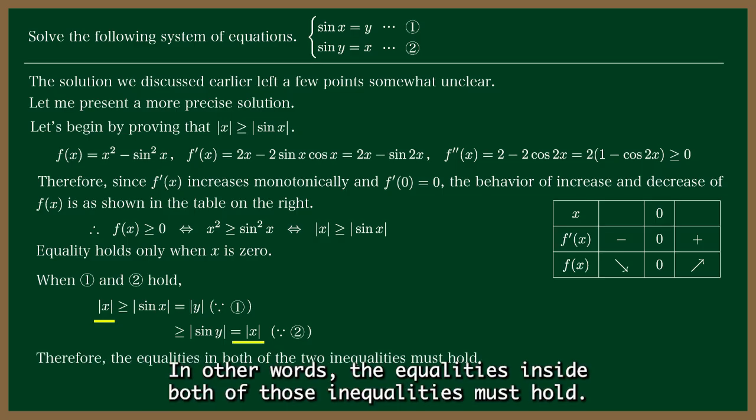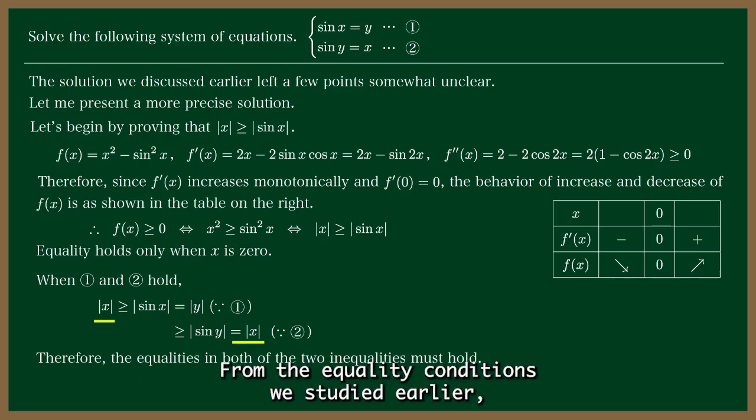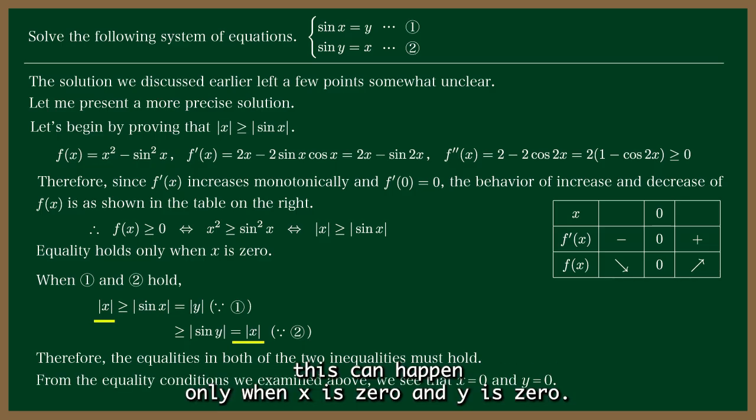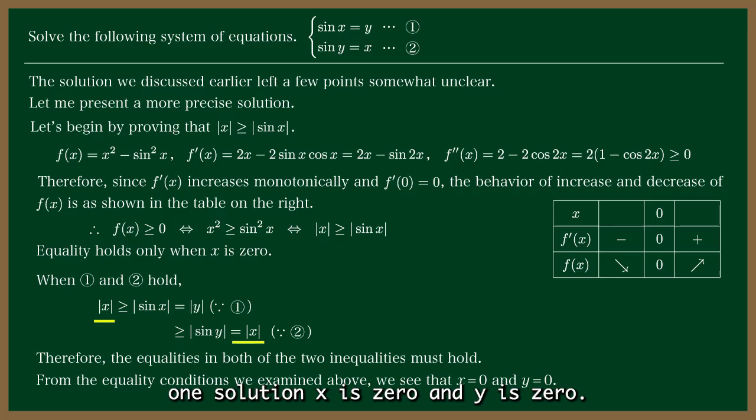In other words, the equalities inside both of those inequalities must hold from the equality conditions we studied earlier. This can happen only when x is 0 and y is 0. Therefore, the system of equations has exactly one solution: x is 0 and y is 0.